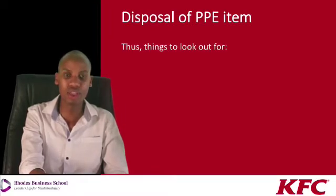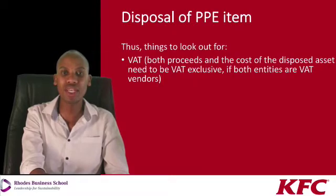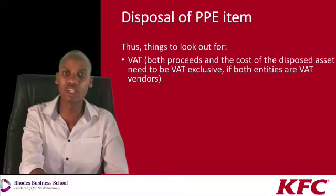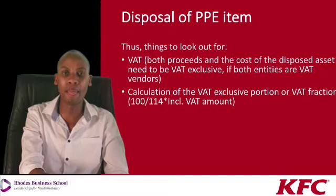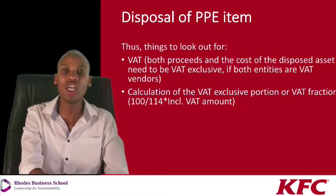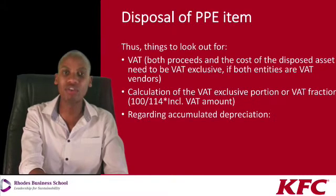Things to look out for: both the proceeds — the amount we sell the item for — and the cost of the item disposed need to be VAT exclusive, provided both the entity and the person from whom the item was purchased are VAT vendors. A quick calculation: simply take the VAT-inclusive amount multiplied by 100 over 114 to get the VAT-exclusive element.